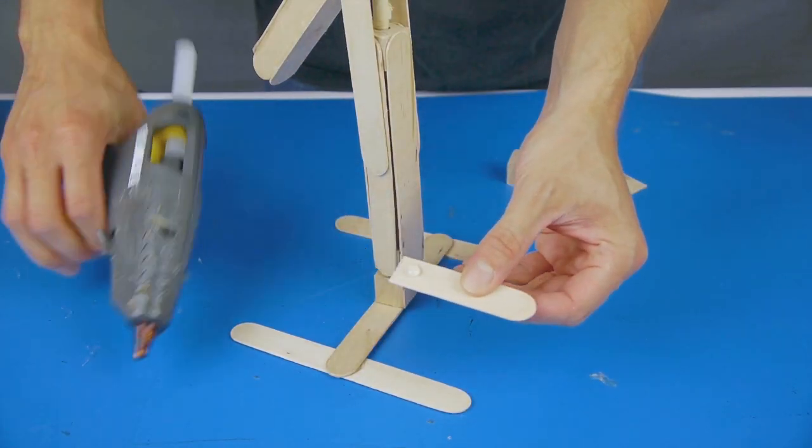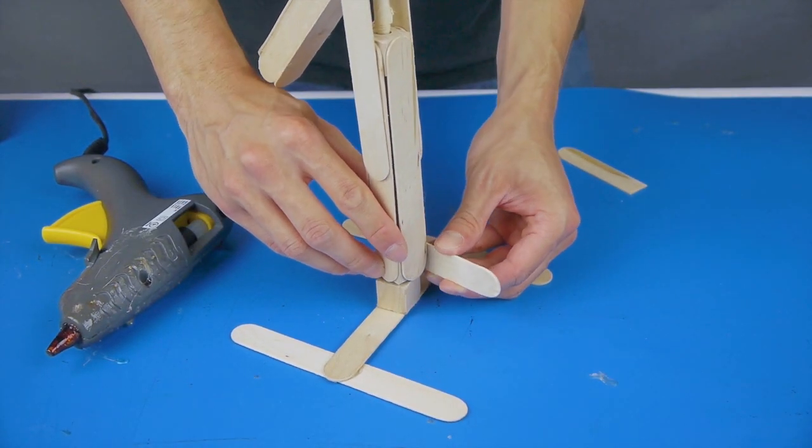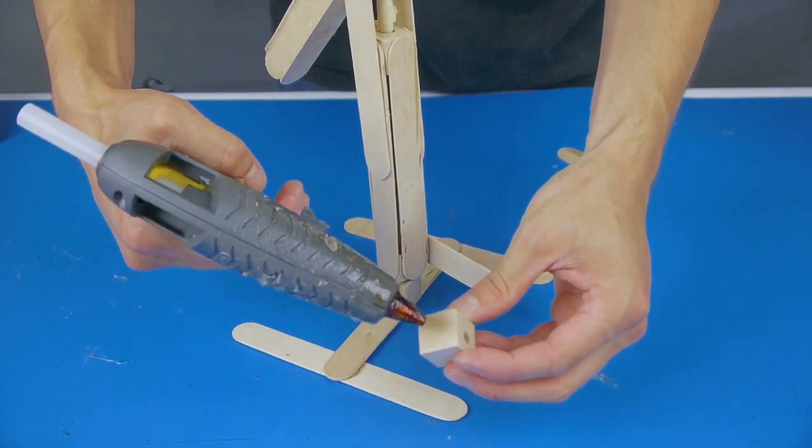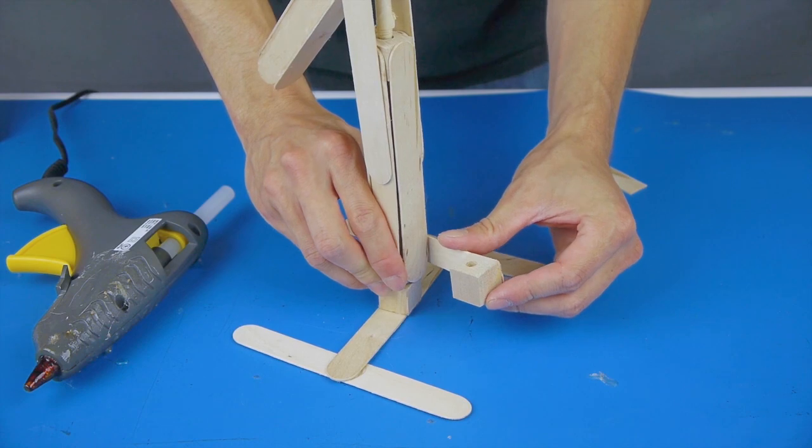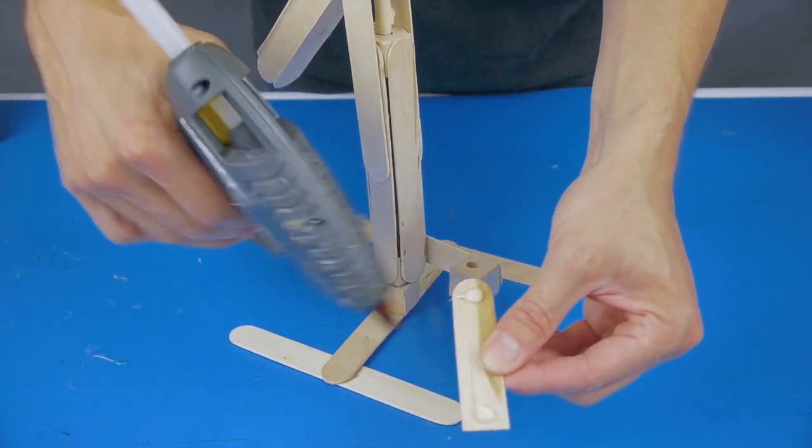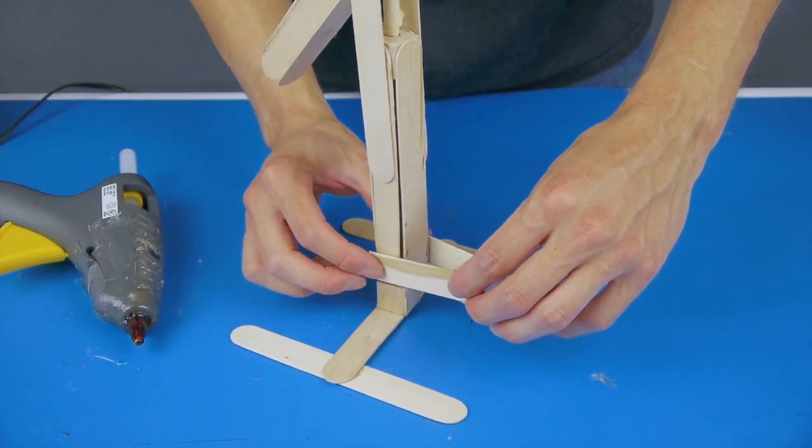The last piece for the foundation is the Hydraulic Connector, which attaches to the bottom of the pivot column. This is where one of the hydraulic systems will attach. Make sure that the Hydraulic Connector doesn't interfere with the pivot column's ability to rotate.